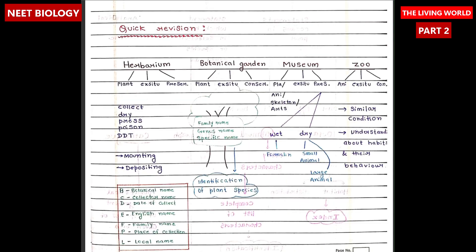Quick revision: Herbarium contains plants — ex situ and preservation. Botanical garden: plant, ex situ and conservation. Museum: plant, animals, skeleton, arts — ex situ and preservation. Zoo or zoological park: animals, ex situ and conservation, with similar conditions provided and understanding about habitats and their behaviors.